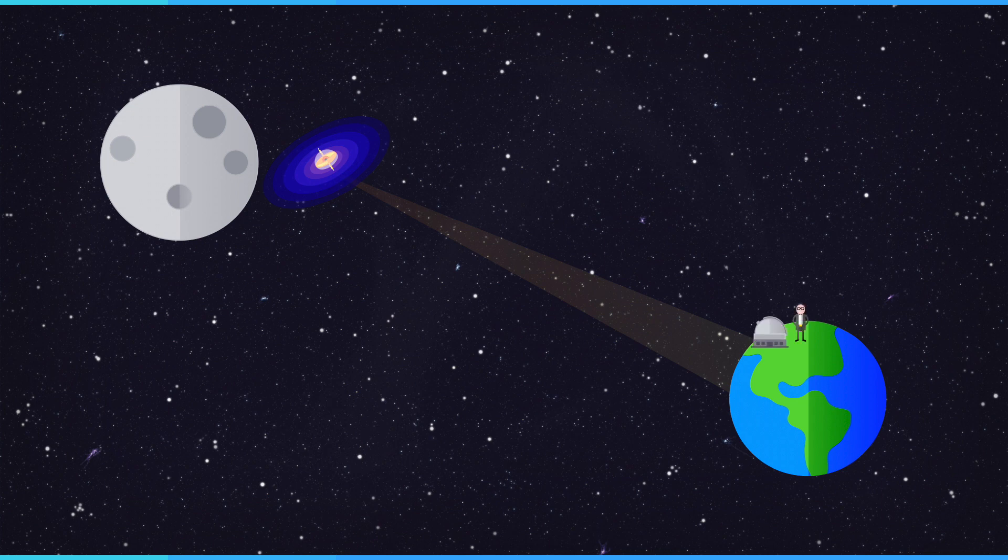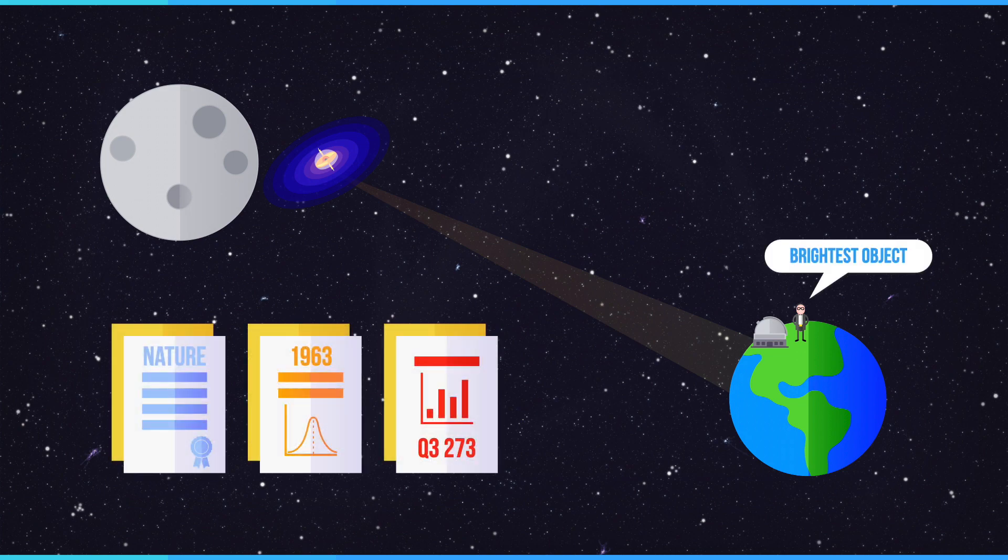Our friend Martin Schmidt took measurements with his trusty telescope. By the way, this telescope was the largest optical telescope in the world at this time. He found that Quinton the Quasar was the brightest object ever discovered and published his breakthrough discovery in Nature in 1963.